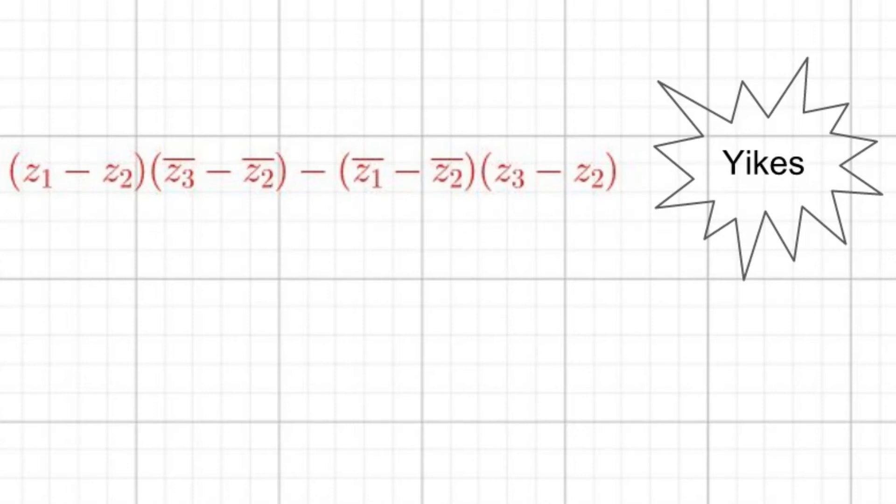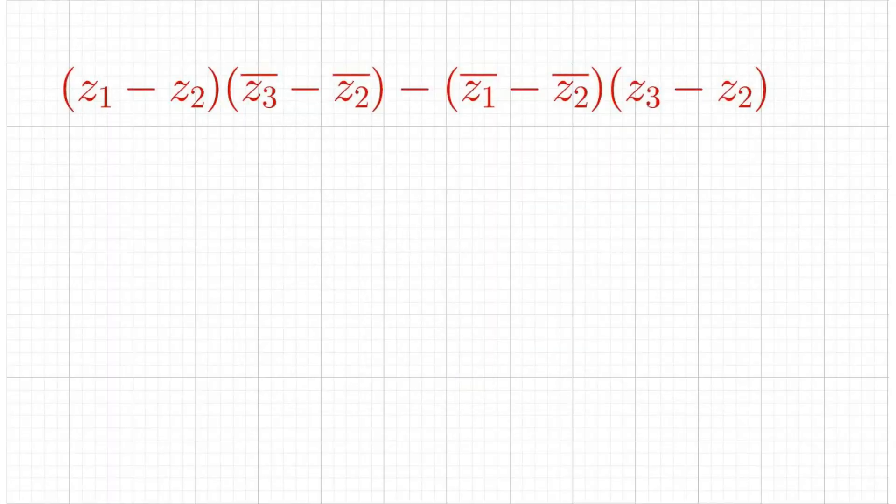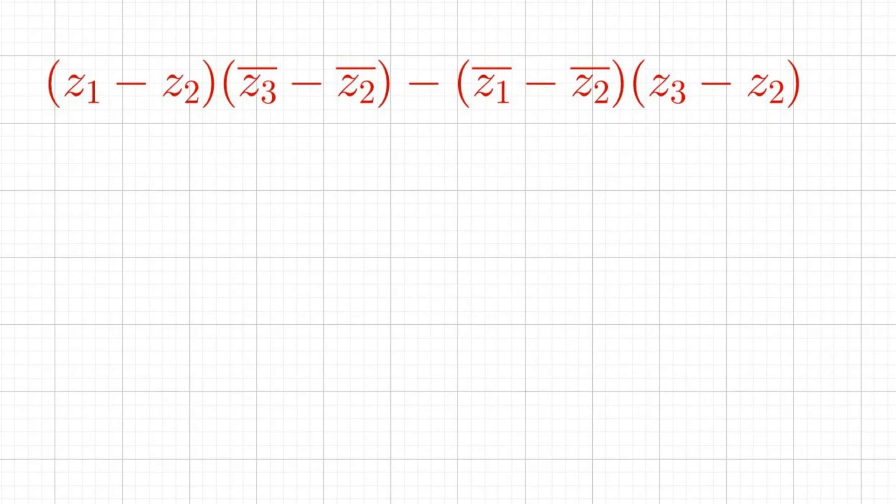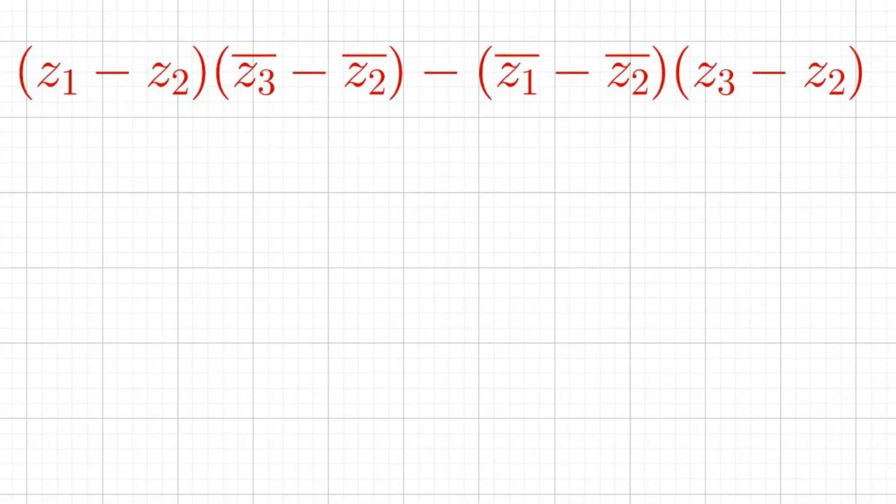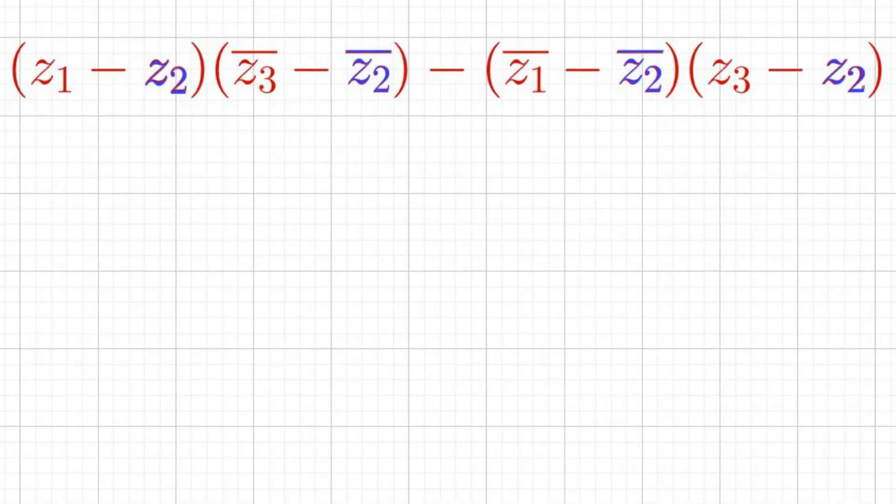Instead, let's look for ways to simplify this expression. There are quite a few terms here, but we can see that Z2 and its conjugate appear in every parenthesis. One way to simplify this expression would be to factor out Z2 by having it be a real number, since every real number is equal to its conjugate. But we can go a step further.